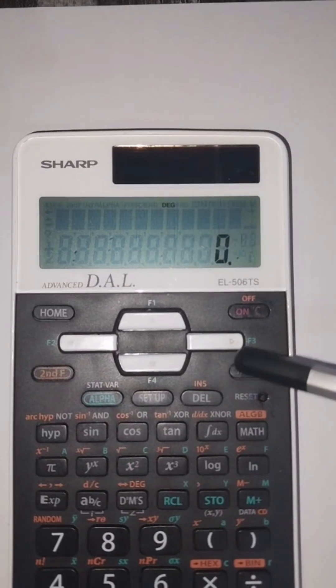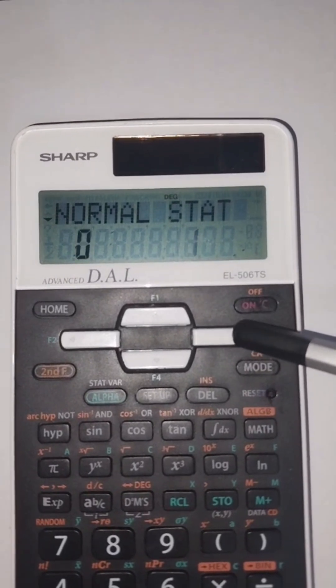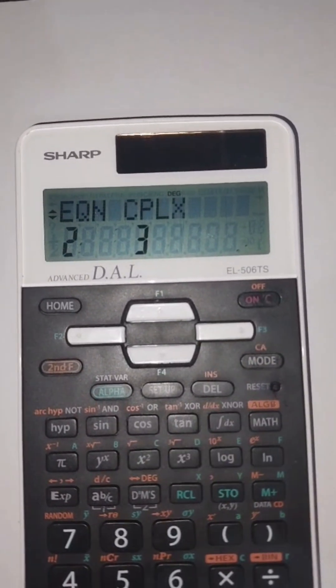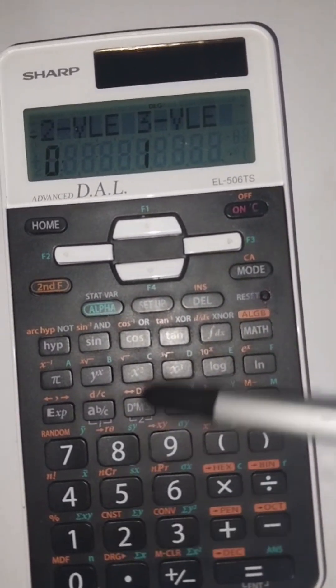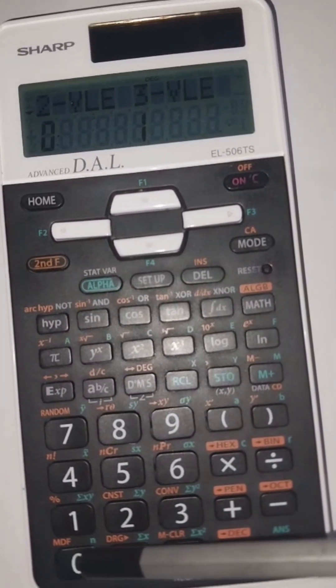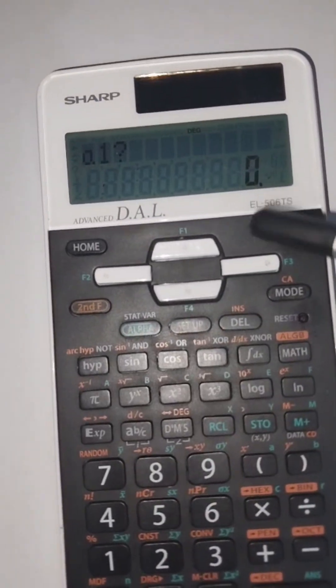Get your calculator and press the mode button. Press the right button twice and then press the number 2 to go to equations. Press the number 0 to go to two variable equations, which is the equations that contain x and y.